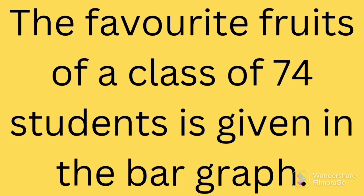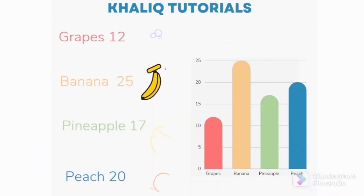Now let us solve some problems. The favorite fruits of a class of 74 students is given in the bar graph. The bar graph shows that 12 students of the class like grapes, 25 students like banana, 17 students like pineapple, and 20 students like peach.